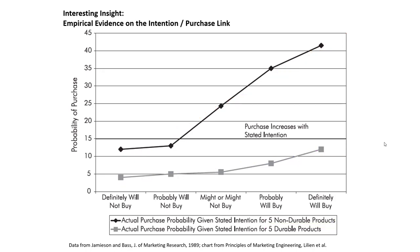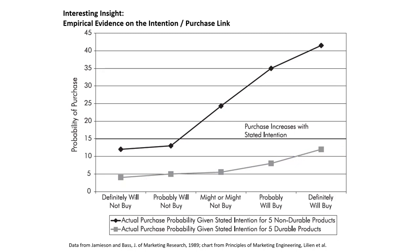For durable products, the purchase probability stays low regardless of people's stated intentions. Remember, durable products tend to be infrequently purchased, expensive, and purchased out of necessity in many cases — like a washing machine. Non-durable products, on the other hand, tend to be cheaper and more prone to easy experimentation and trial. Here, the relationship between stated intentions to purchase and actual purchase probability is much stronger.